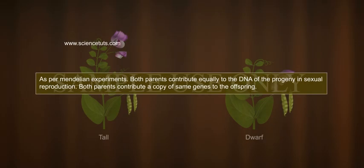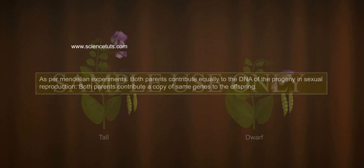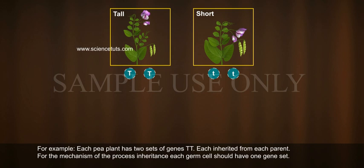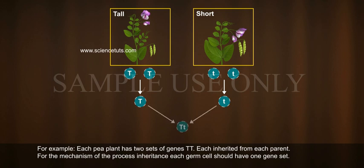As per Mendelian experiments, both parents contribute equally to the DNA of the progeny in sexual reproduction. Both parents contribute a copy of same genes to the offspring. For example, each pea plant has two sets of genes, each inherited from each parent. For the mechanism of the process of inheritance, each germ cell should have one gene set.